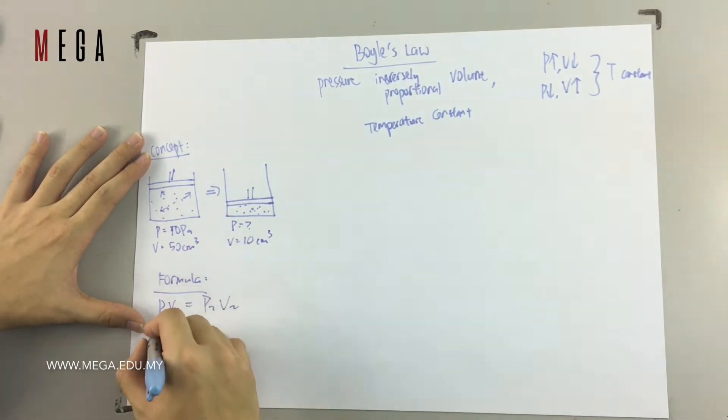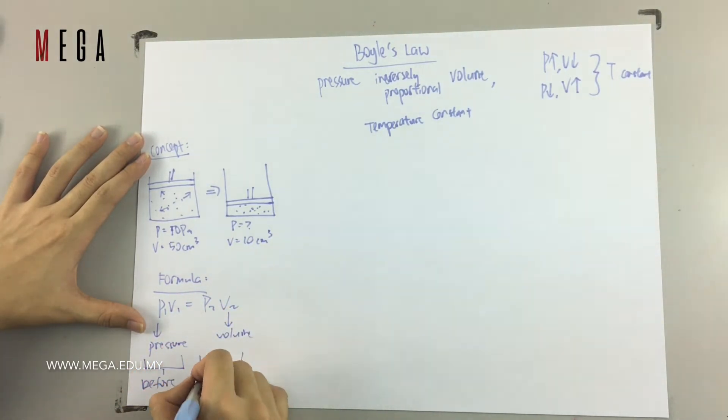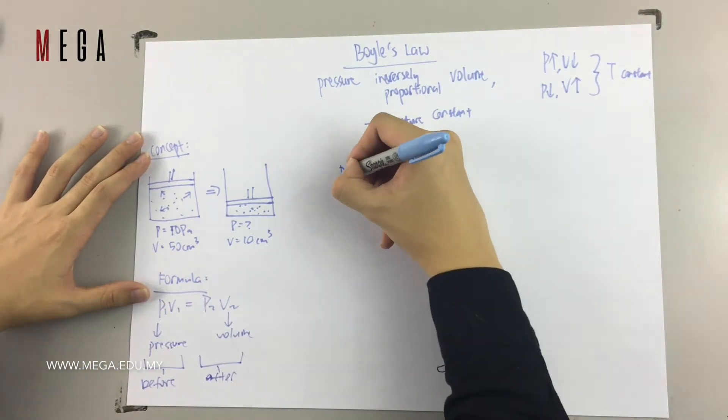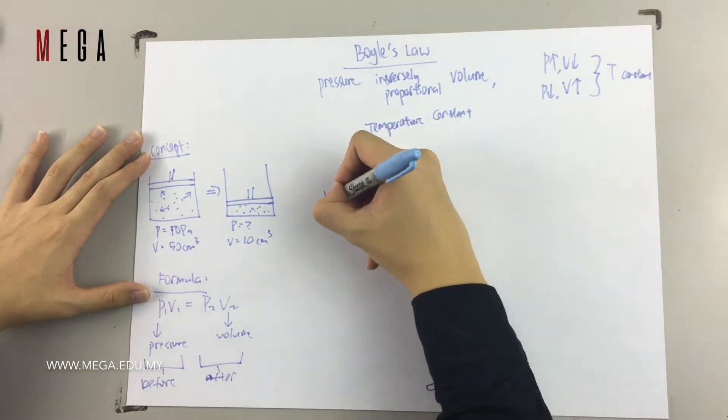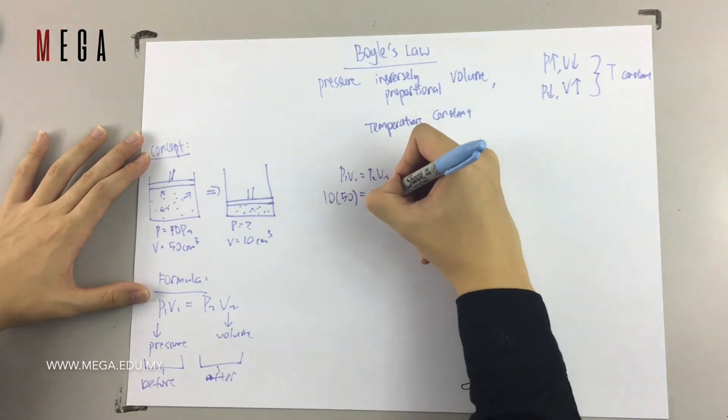Here comes another formula. In our formula, it is P1V1 equals to P2V2. What is 1, 2? 1 is like before, 2 is like after. P is pressure, V is volume. So it is like comparing the pressure and the volume.